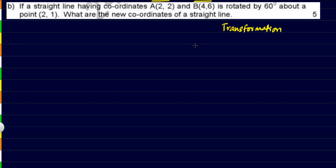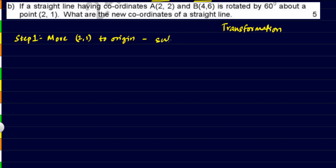We have to find the final coordinates of this point. The solution will happen in three stages. Step 1: we have to move (2, 1) to the origin. To do this, we have to subtract (2, 1) from all points.